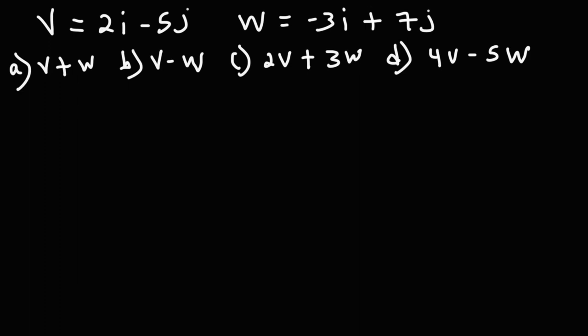In this lesson we're going to focus on vector operations. We're going to add and subtract vectors. In this problem we have two vectors: vector v which is 2i minus 5j, and vector w which is negative 3i plus 7j.